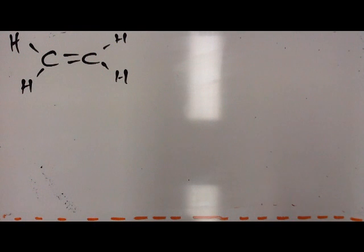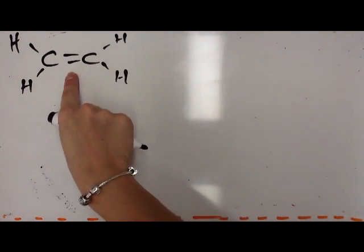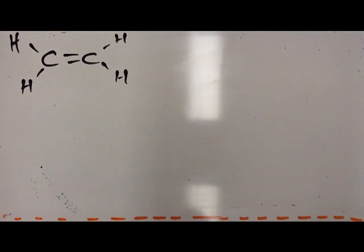So this video is looking at how to draw a polymer if we know what the monomer is. The monomer has a carbon-carbon double bond. To draw the polymer, we follow a few easy steps.